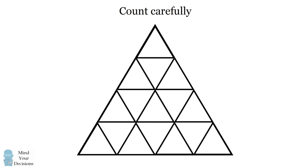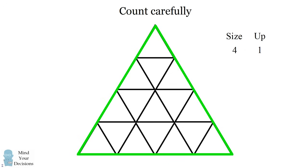We need to count the number of triangles very carefully. We'll first consider triangles which have a size of 4, which means its side length is equal to 4 times the smallest triangle. There's exactly one triangle of this type and this triangle is facing upward.